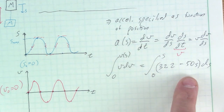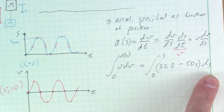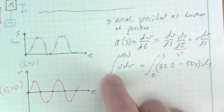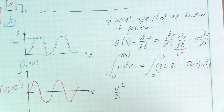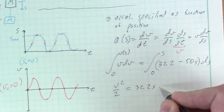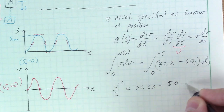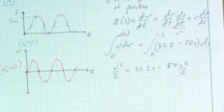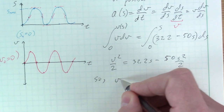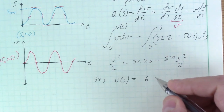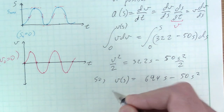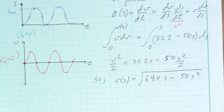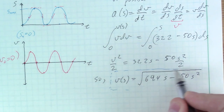Evaluating the integrals, the left-hand side gives v²/2, and the right-hand side gives 32.2s minus 50s²/2. Solving for v(s), we multiply through by two and take the square root: v(s) = √(64.4s − 50s²). This gives us velocity as a function of position — if you give me any position s, I can tell you the velocity.